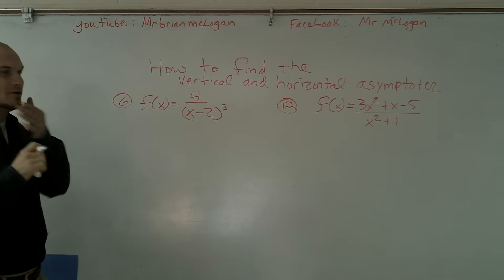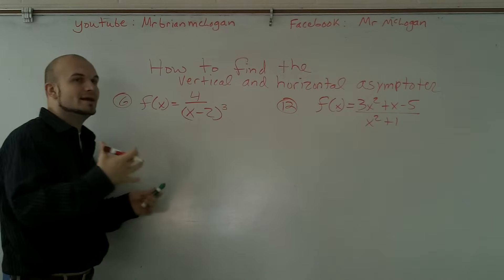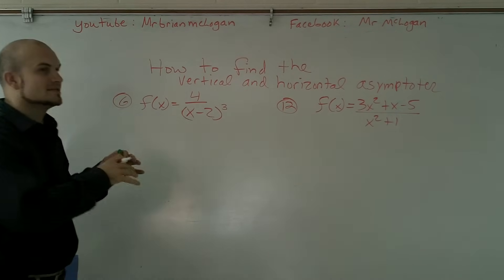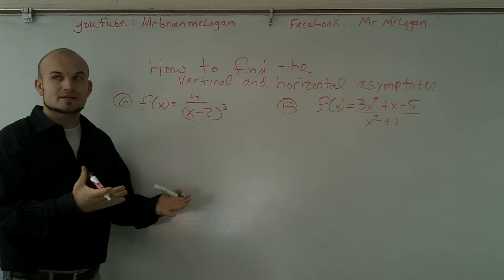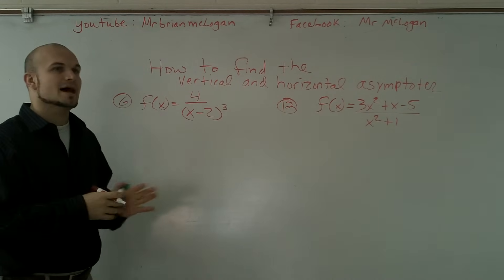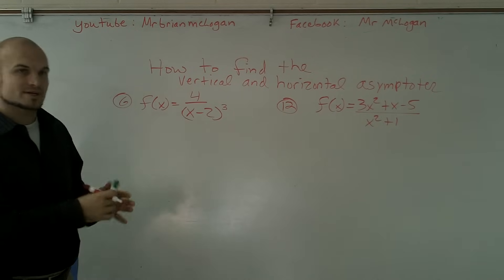Alright, what I'd like to do is show you guys how to find the vertical and horizontal asymptotes. Remember what an asymptote is: as our graph is approaching a certain number, it's going to keep on approaching that line, but it's never actually going to get to that point.